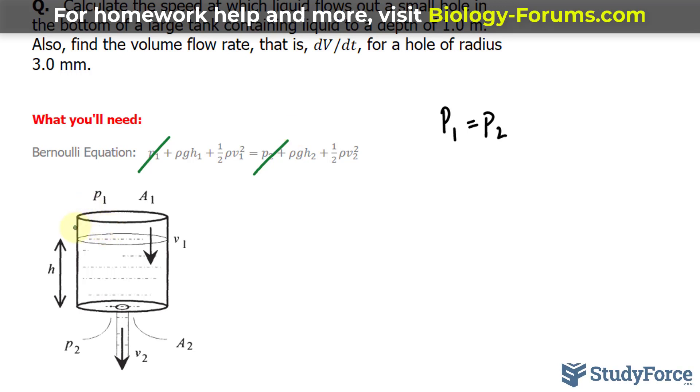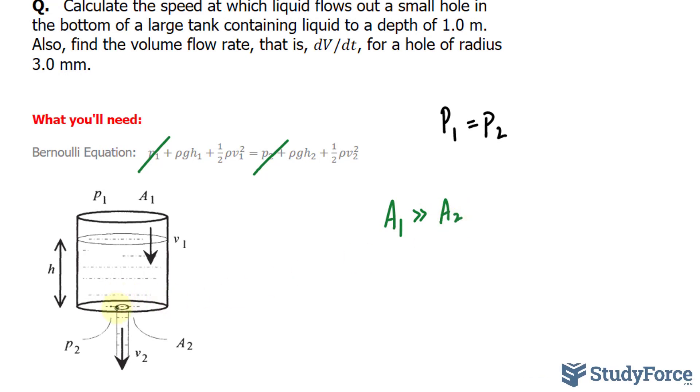Furthermore, the area at the top of the tank, which I'll call A sub 1, is much greater than the area in which the water is flowing out, the water is leaking out. Because of that, the speed at which the water descends up here is almost negligible to the speed at which the water flows out of this hole.